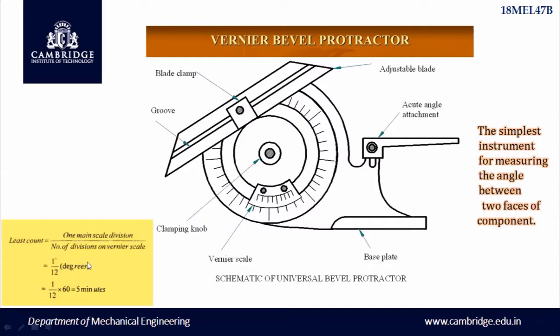The least count of this device is given by one main scale division divided by the number of divisions on the vernier scale. The value of one main scale division is one degree, which equals 60 minutes. Divided by the number of divisions on the vernier scale — which is 12 — gives 60 divided by 12, equal to 5 minutes. That is the least count of this vernier bevel protractor.